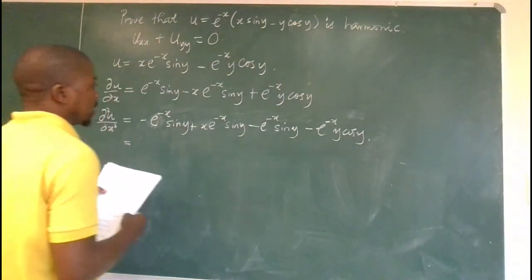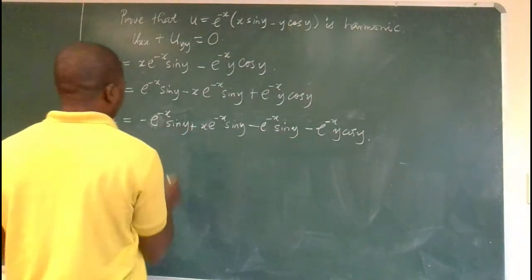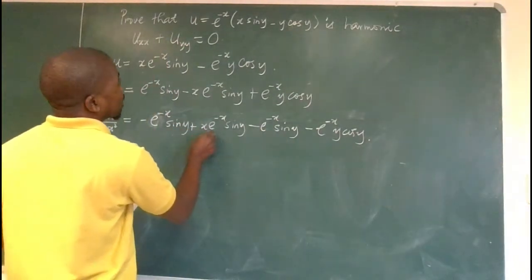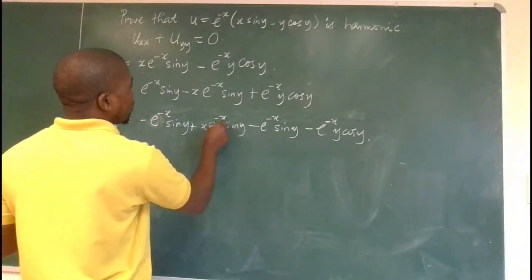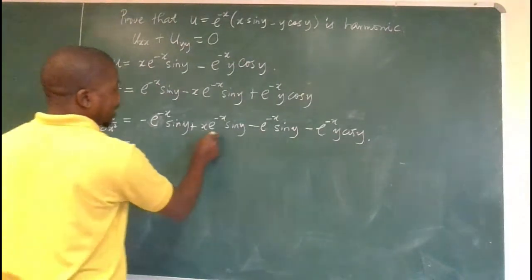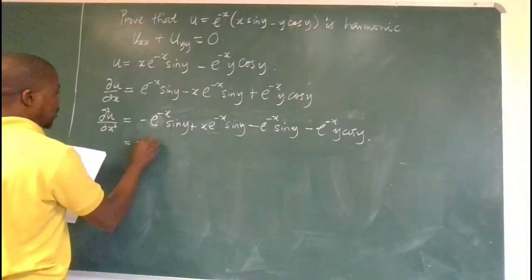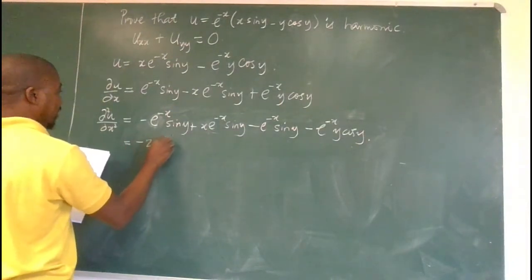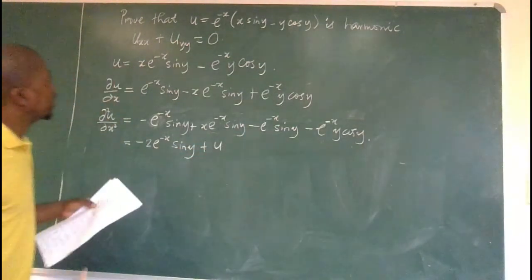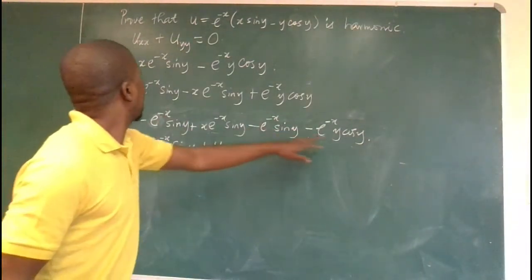If we check closely, two terms combine to give minus 2 e to the power of minus x sin y. Taking those common, we remain with x e to the power of minus x sin y, which is exactly u. So we end up with minus 2 e to the power of minus x sin y plus u.